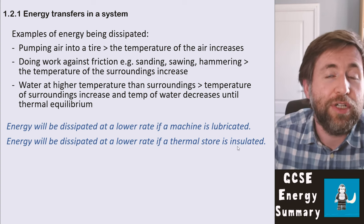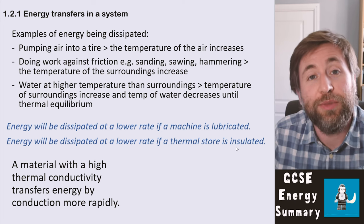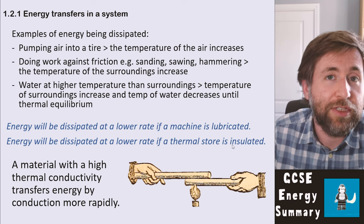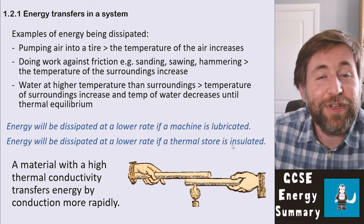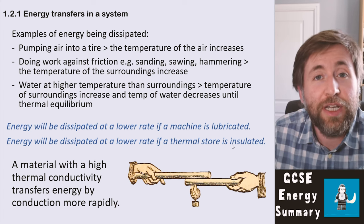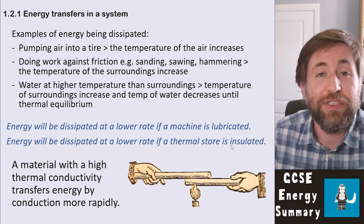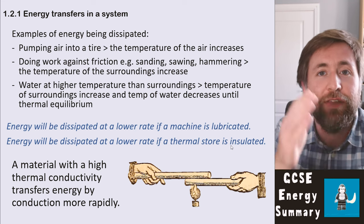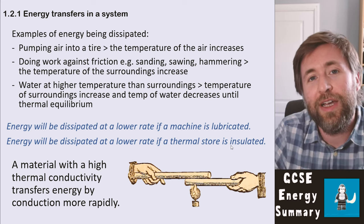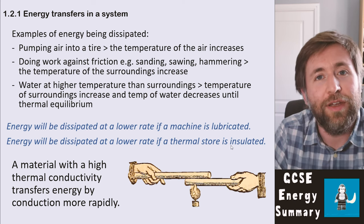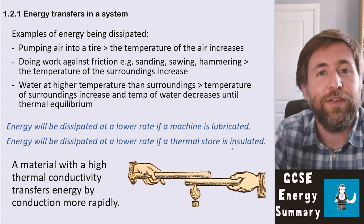A material with a high thermal conductivity transfers energy by conduction more rapidly. A demonstration can show that one metal transfers heat at a higher rate than another, or that metals transfer heat faster than wood — meaning they have a higher thermal conductivity. At GCSE, avoid saying something 'is a conductor' or 'is an insulator.' Instead say it has a higher or lower conductivity — acknowledging that nothing is perfectly one or the other, but exists on a scale.